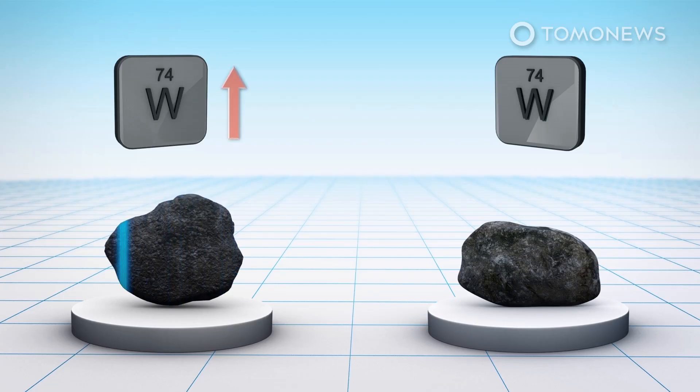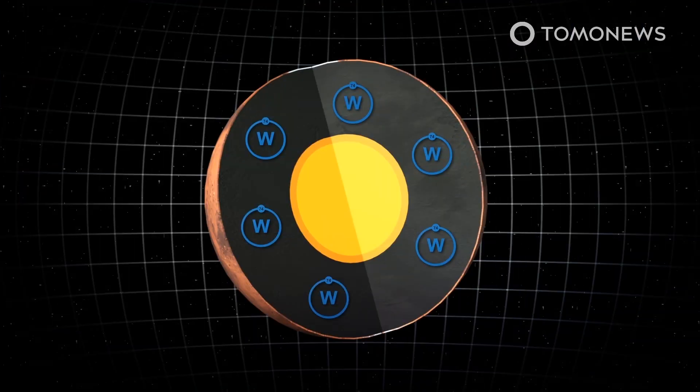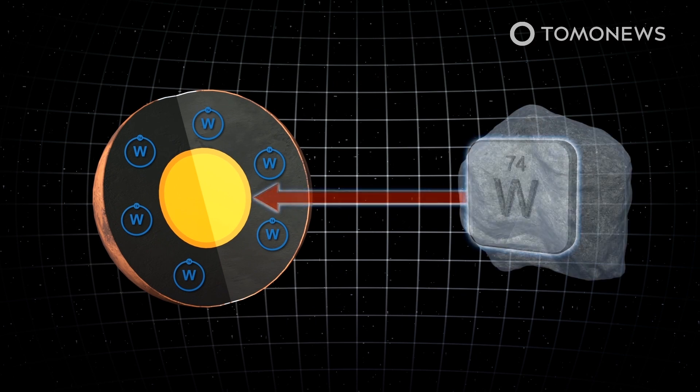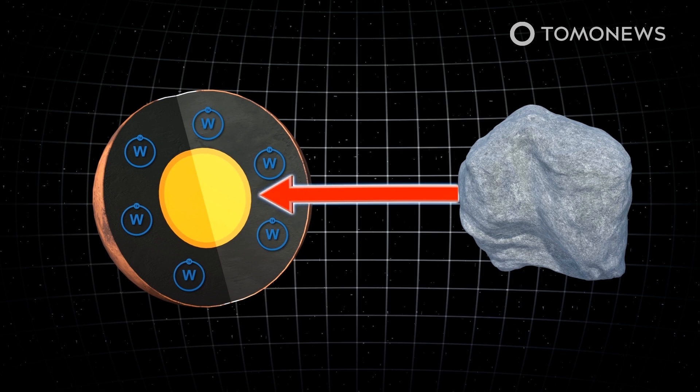According to the Southwest Research Institute, Martian meteorites' tungsten content are highly varied. Since tungsten migrates from a planet's mantle to its core during formation, scientists are led to believe that Mars formed rapidly in 2 to 4 million years.